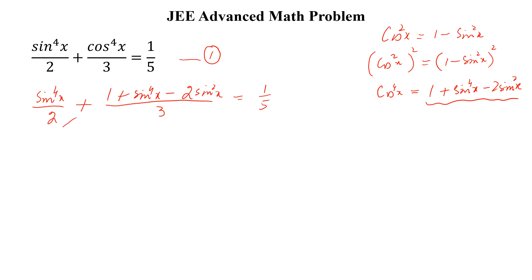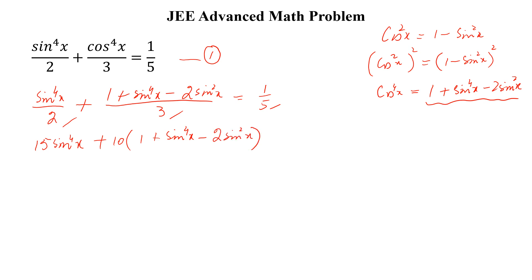The LCM of 2, 3, and 5 is 30. So we multiply both sides by 30 and we get 15 sine to the power 4x plus 10 into 1 plus sine to the power 4x minus 2 sine square x is equal to 6.